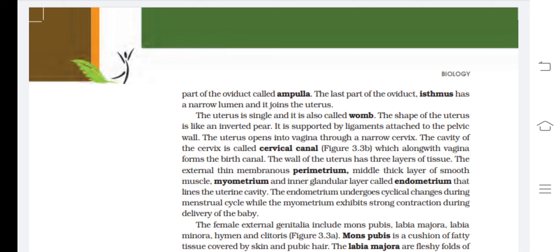The uterus is single, also called the womb, and is shaped like an inverted pear. It is supported by ligaments attached to the pelvic wall and opens into the vagina through a narrow cervix. The cervical canal, along with the vagina, forms the birth canal. The wall of the uterus has three layers: the external thin perimetrium, the middle thick myometrium (smooth muscle), and the inner glandular endometrium.